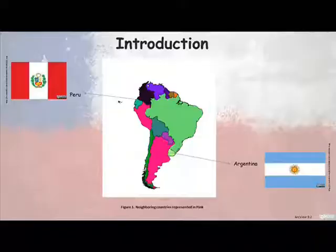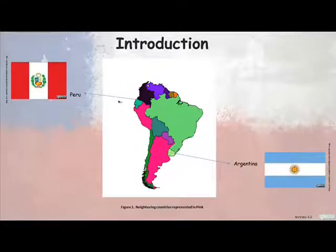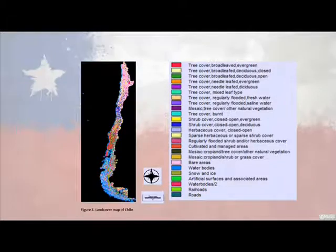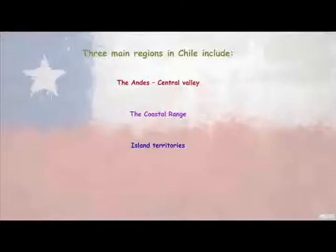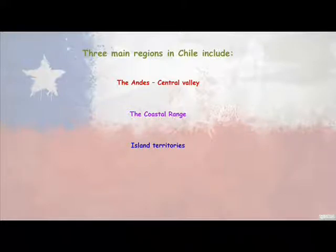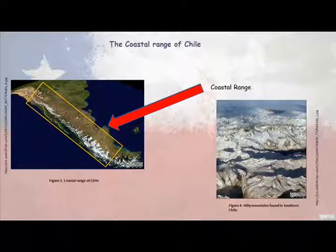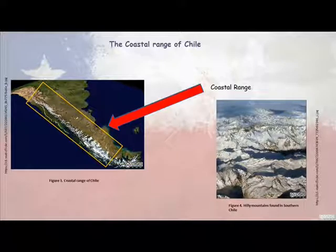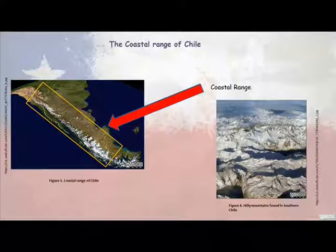Chile is a country that is unique in its shape. Figure 2 represents the land use of Chile. Chile consists of three main regions: the Andes, the Central Valley, the Coastal Range, and the Island Territories. The Coastal Range is known as the Coralea de la Costa. This region stretches from Eureka to Port-au-Mont. The altitude of this coastal range is 8,800 feet, and the south of this island is covered by Healy Mountains.